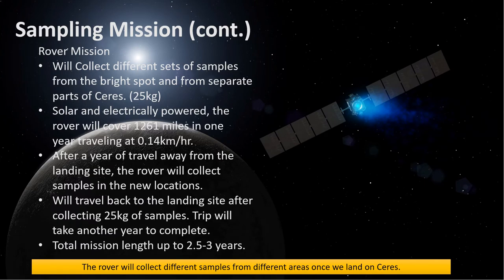After landing on Ceres, we will have a rover powered electrically and by solar to collect the samples from Ceres at different locations. The rover has a speed of 0.14 kilometers per hour and can easily cover almost 1,300 miles per year.